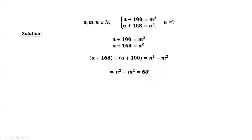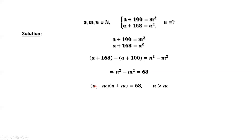Since 68 is positive, this implies N is bigger than M. Factoring the left-hand side, we have (N minus M) times (N plus M) equals 68. Since N is bigger than M, the left-hand side is a product of two positive integers where the first integer is less than the second integer, and the right-hand side is 68.